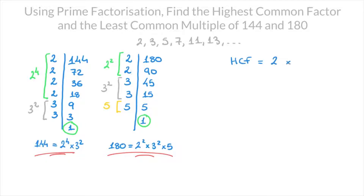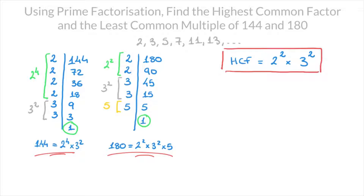So I start by writing 2 times 3. But we don't stop there. For the highest common factor, I now need to look for the smallest or lowest power of each of those two factors as I look through the prime factorizations. Looking at the factor of 2: 144 has 2 raised to the power of 4, and 180 has 2 raised to the power of 2, so the smallest power of 2 is 2. For the factor of 3, both 144 and 180 have 3 raised to the power of 2, so the HCF includes 3 to the power of 2. That gives us 2² × 3², which is 4 × 9 = 36.